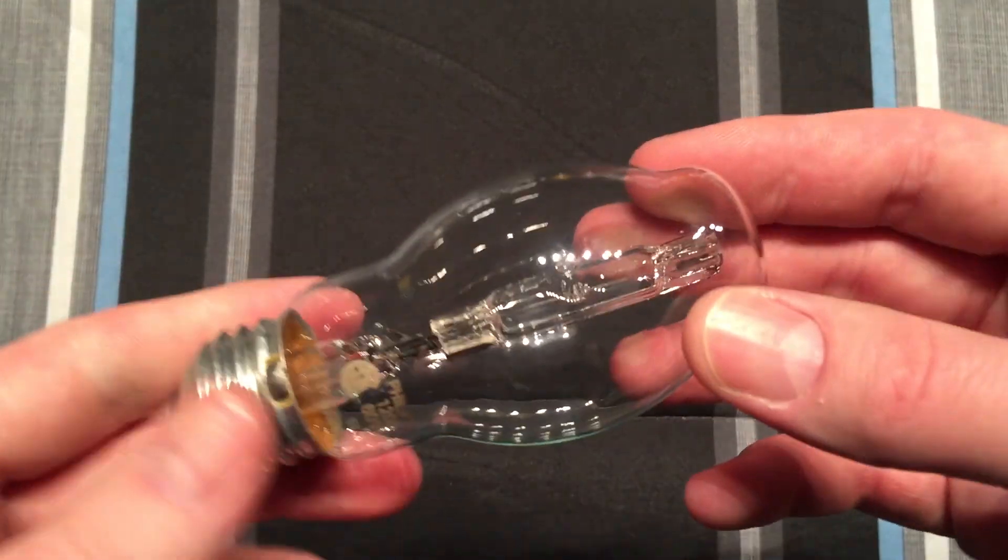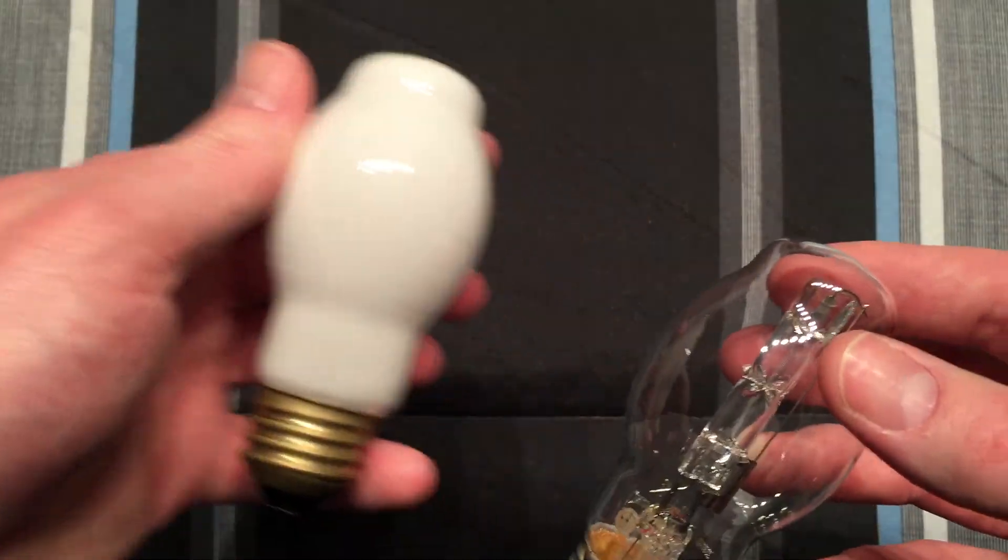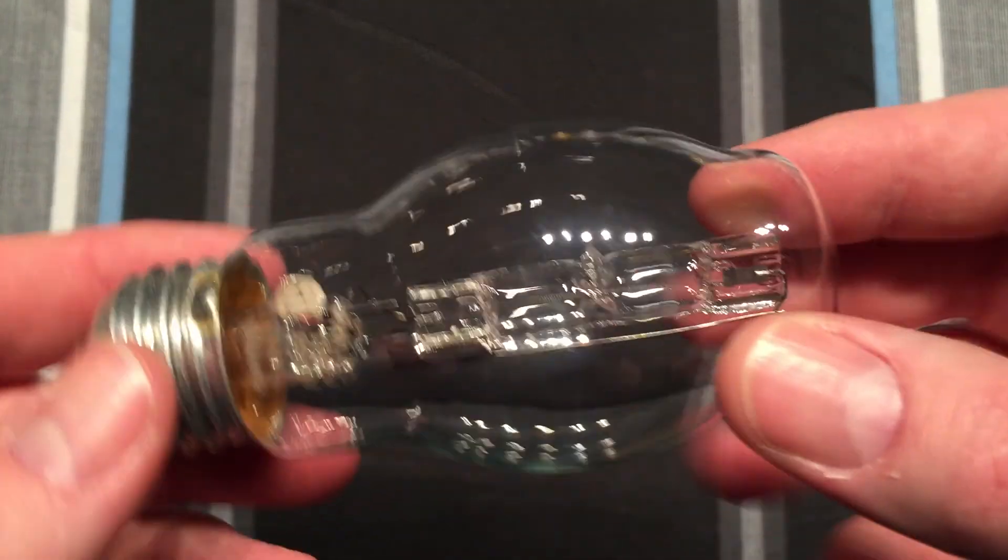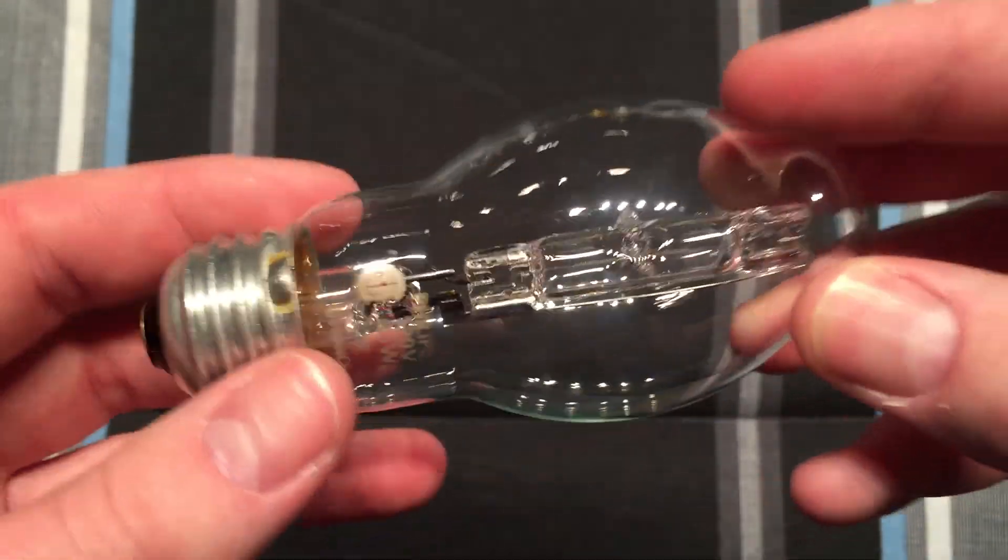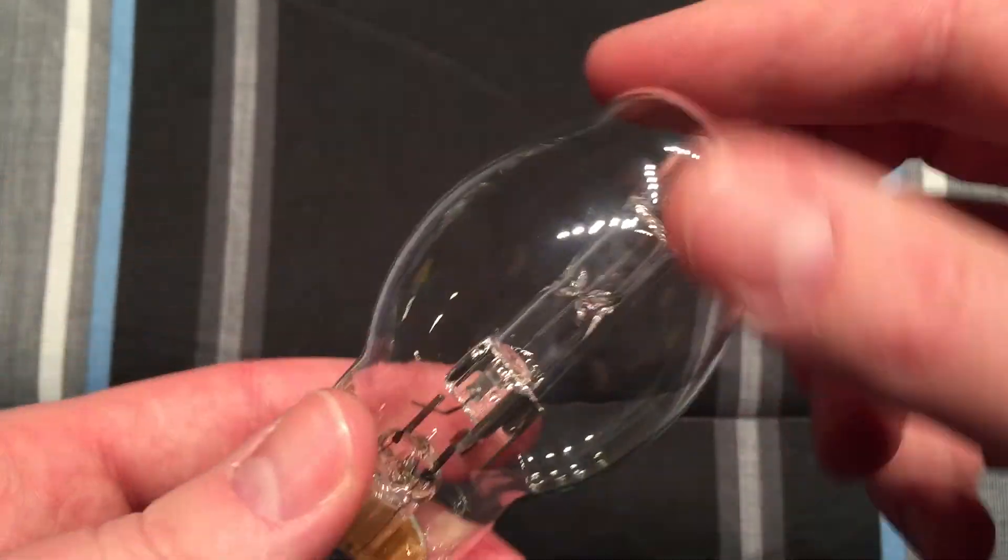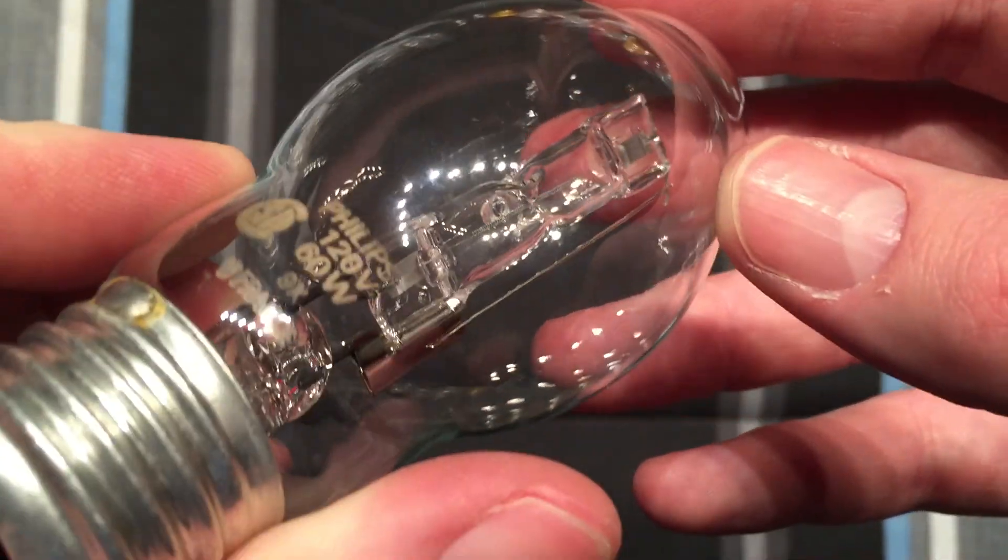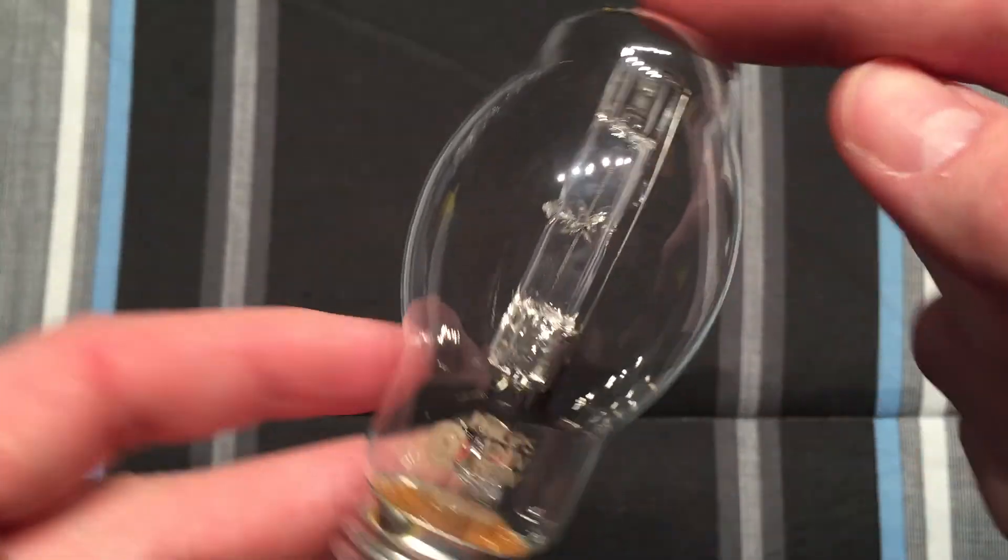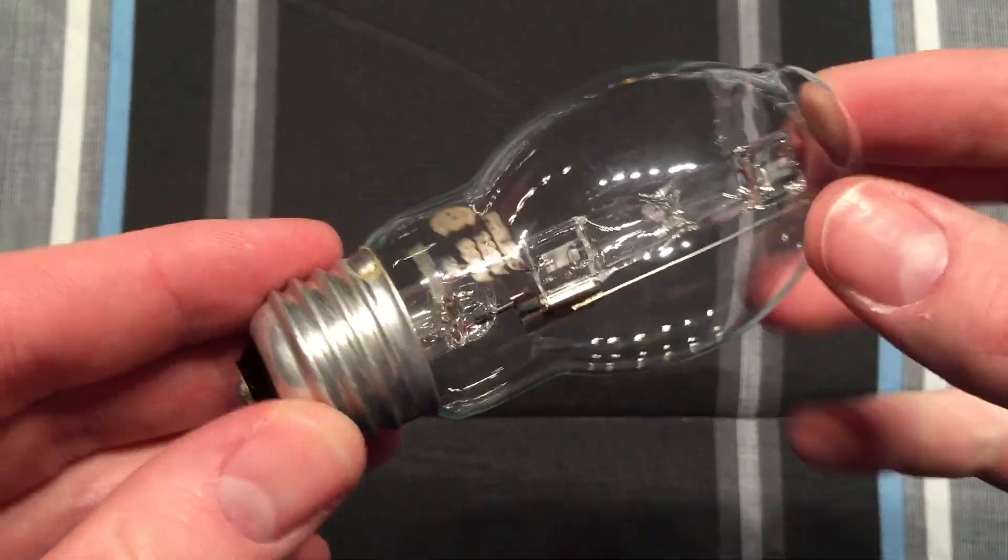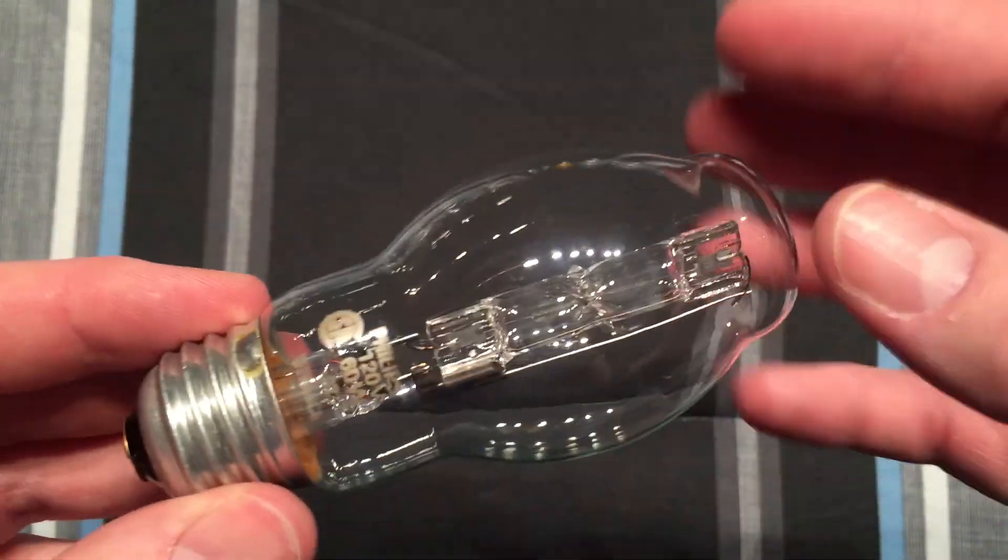They were shaped like this and also came in frosted versions. I remember getting these because I thought they looked just like street light bulbs. They're BT shape, which is blown tubular. I thought they were cool, so I decided to pick them up when they first came out.